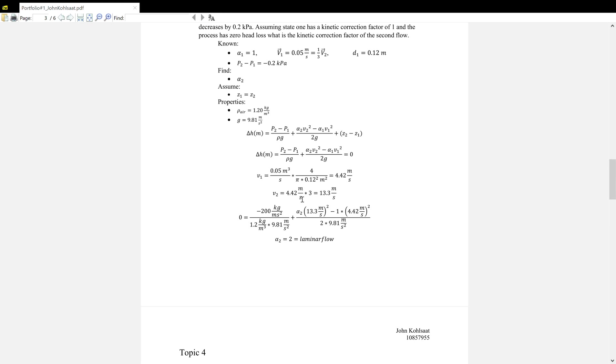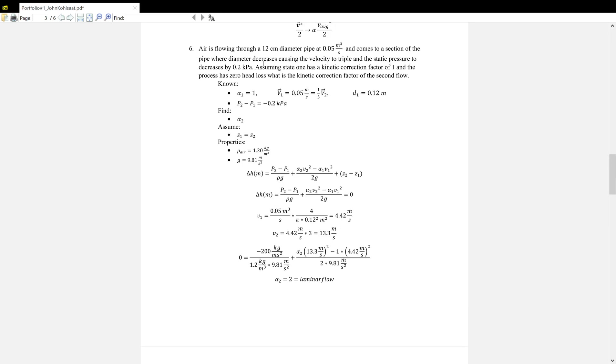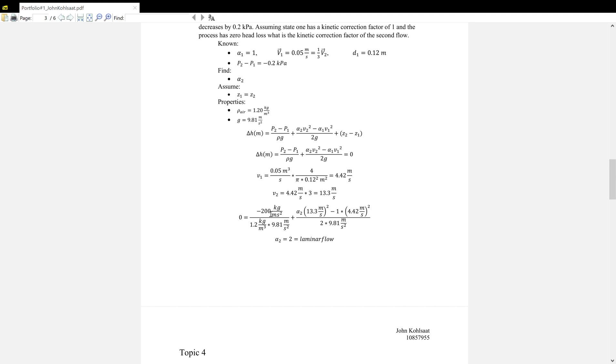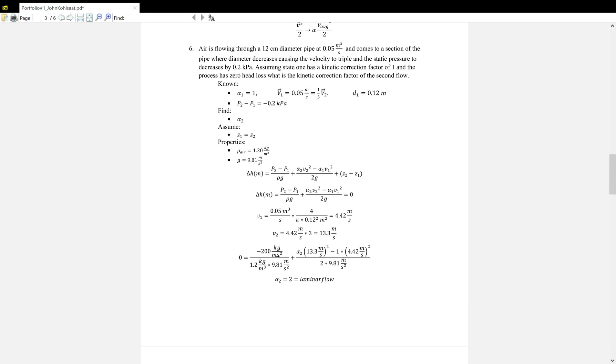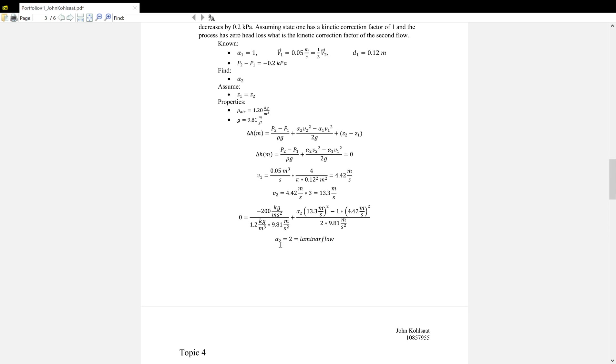From that, we equal it to zero because we're told there is zero head loss and there's no pump or turbine in the system. We can get V1 from the volumetric flow rate times the area to get 4.42 meters per second. And then V2, because we were given V2 equals three times V1, gets to 13.3 meters per second. We are given P2 minus P1, and so we plug everything in to get alpha 2. We get a kinetic correction factor equals two. And for a kinetic correction factor of two, the flow will be laminar.